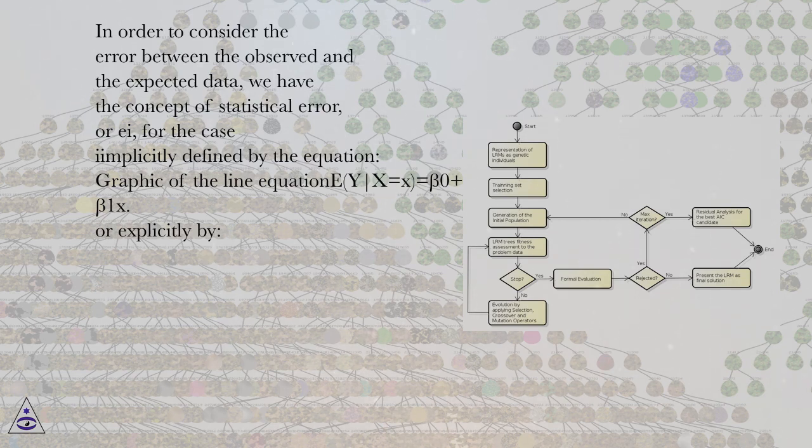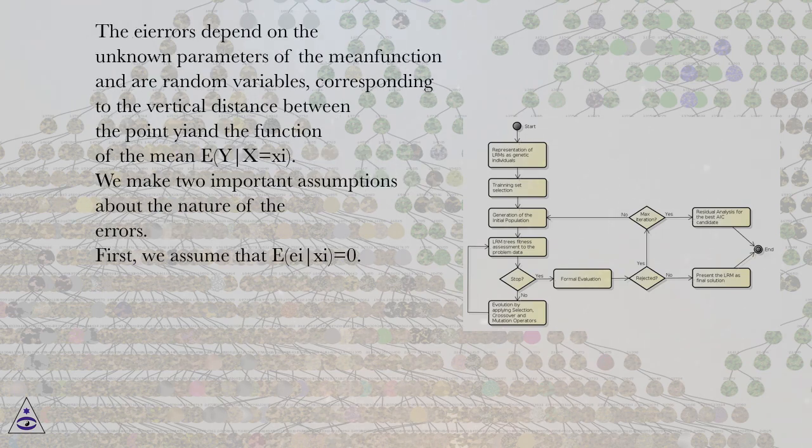Graphic of the line equation Y|X=x equals beta 0 plus beta 1 X, or explicitly by. The εi errors depend on the unknown parameters of the mean function and are random variables, corresponding to the vertical distance between the point Yi and the function of the mean E[Y|X=xi].